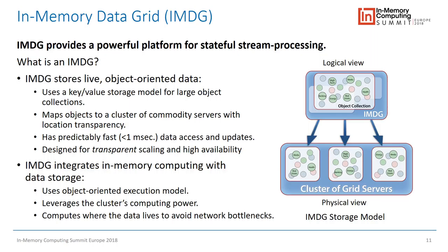High-end in-memory data grids do automatic load balancing, automatic high availability, and maintain a sequential consistency model. Some grids like Redis use eventual consistency, but for business logic state our customers require sequential consistency — meaning a read always returns the latest update even after a failure or rebalancing. Grids are great for storage, but since they run on clusters with many cores and servers, there's a lot of computing power available, making them an excellent platform for in-memory computing as well.